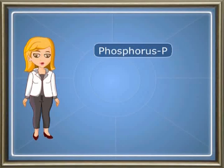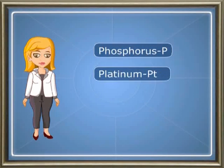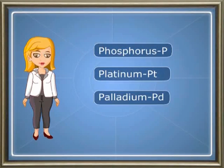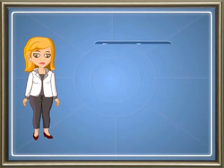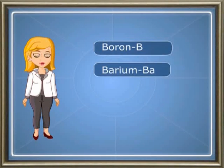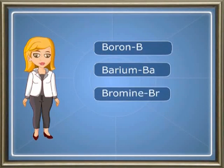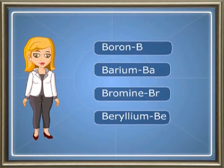The symbol of phosphorus is P; for platinum, Pt; palladium, Pd. For boron, B; barium, Ba; bromine, Br; and beryllium, Be.